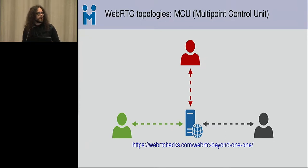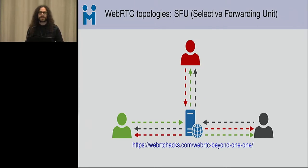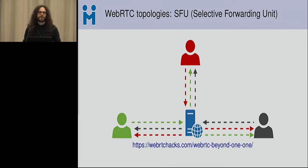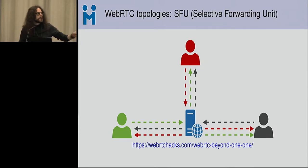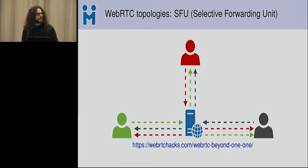Much more common in WebRTC deployments lately, you choose an SFU — a selective forwarding unit. How this works is that you never do any mixing; you basically publish something towards a media server and others can subscribe to it. It's much better than full mesh because in full mesh with four people you have to encode and send three times the same thing, whereas with an SFU you send once and everybody picks it up. You save on CPU and bandwidth, especially on the client side.